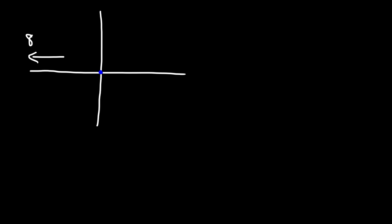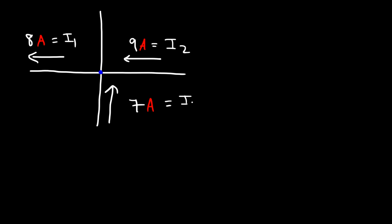Now let's try a harder example. Here's the junction. We have a current of 8 amps — call it I1 — flowing away from the junction. We have 9 amps — I2 — flowing into the junction, and 7 amps — I3 — also flowing in. Go ahead and calculate I4: its magnitude and direction. Feel free to pause. We'll write an expression, summing all currents and setting the result equal to zero.